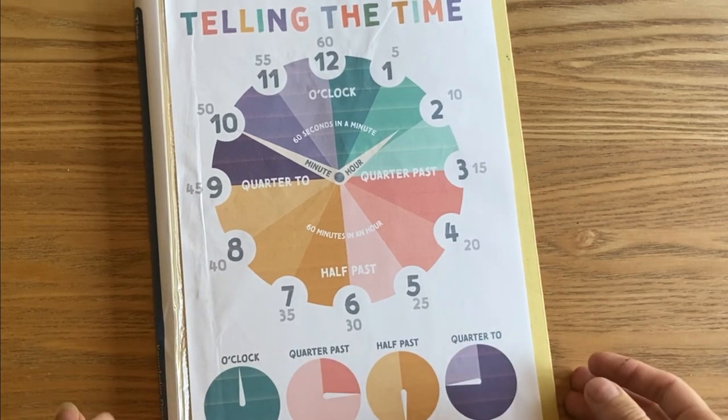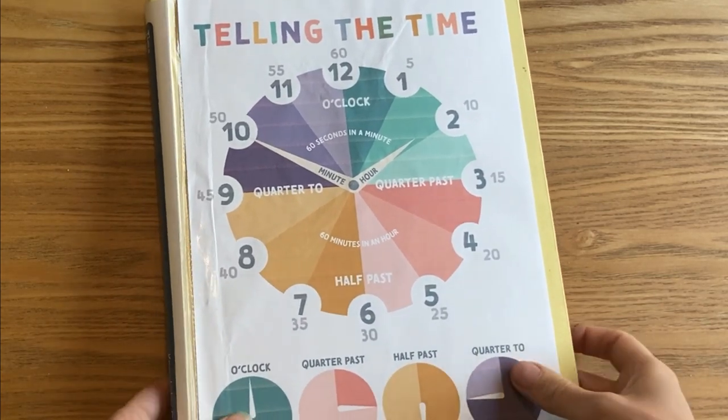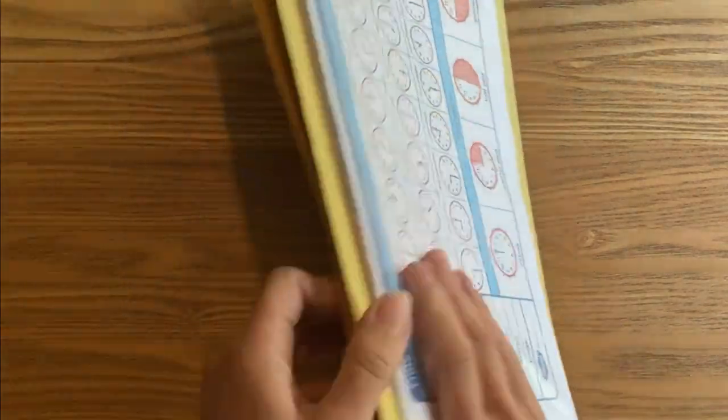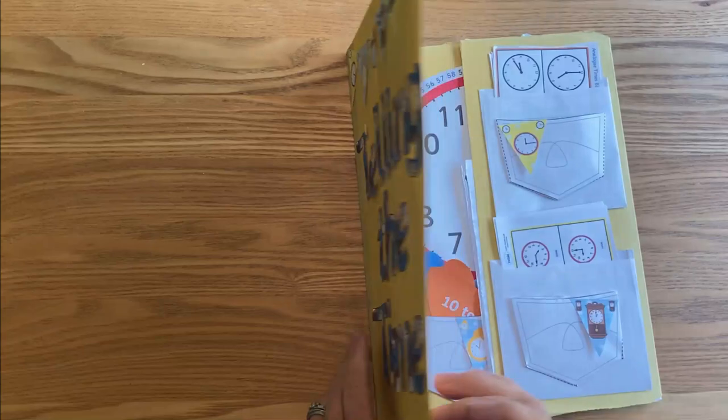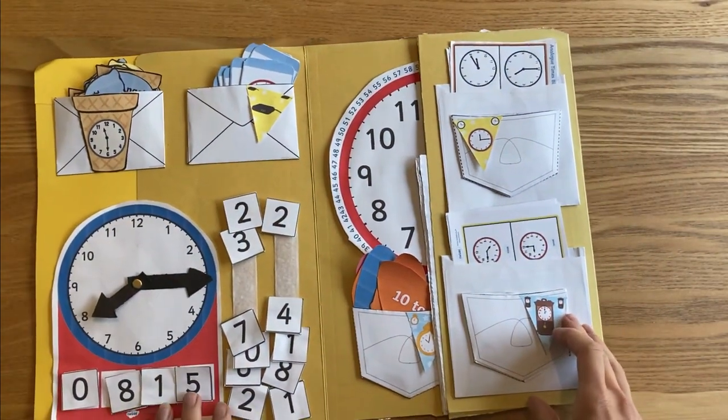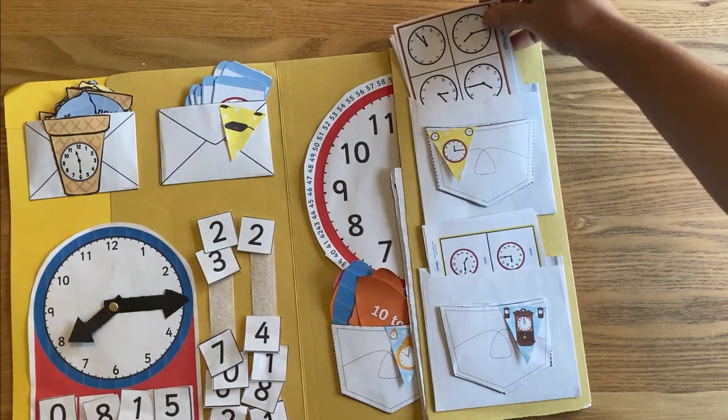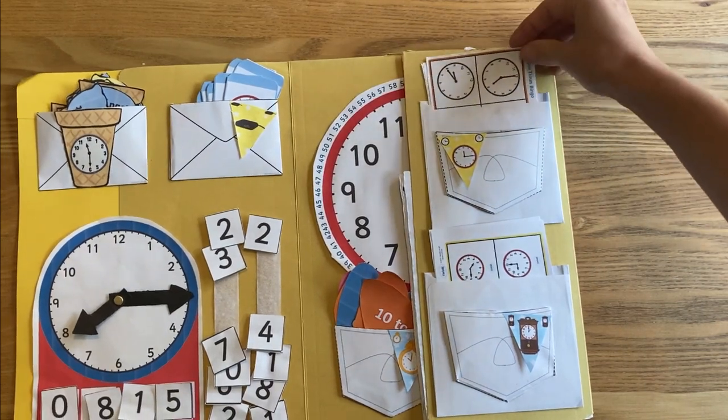Let's have a look inside. Inside the lap book, to start with we've got two different bingo sheets here with cards that go with them. We've got analog telling the time cards and then digital times to see if we can match up the digital and analog times.